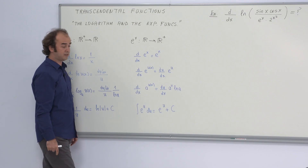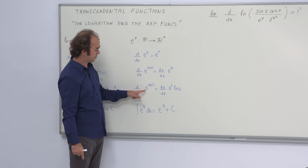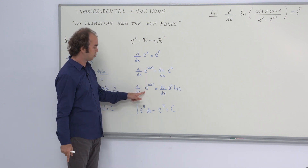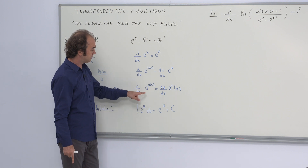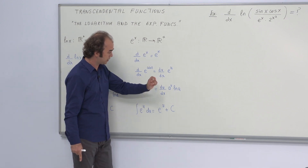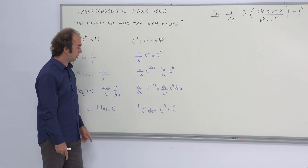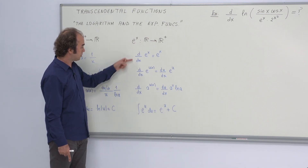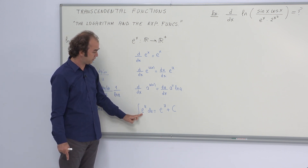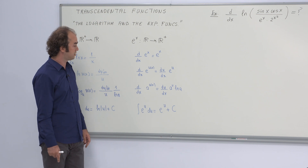If the base is not e but any positive number a not equal to 1, the derivative of a^u is u' times a^u with a factor ln(a). Correspondingly, the integral of e^u is equal to e^u plus an arbitrary constant c.